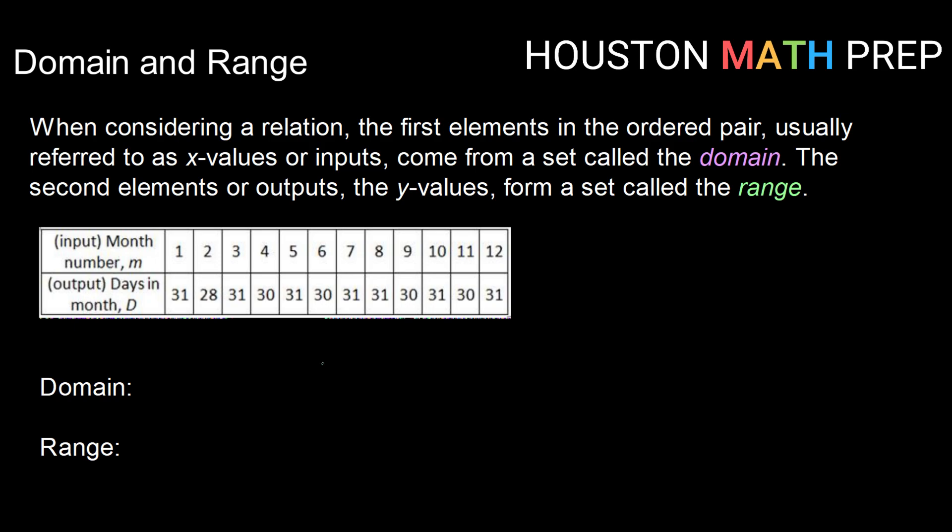So here we're going to take a look at how we can do that from our values given to us in a table format. So again, domain comes from inputs. When we list, in this case, when our inputs are month numbers, we look and say, okay, what are the possible values that we can use as inputs? Since we have 1 through 12...